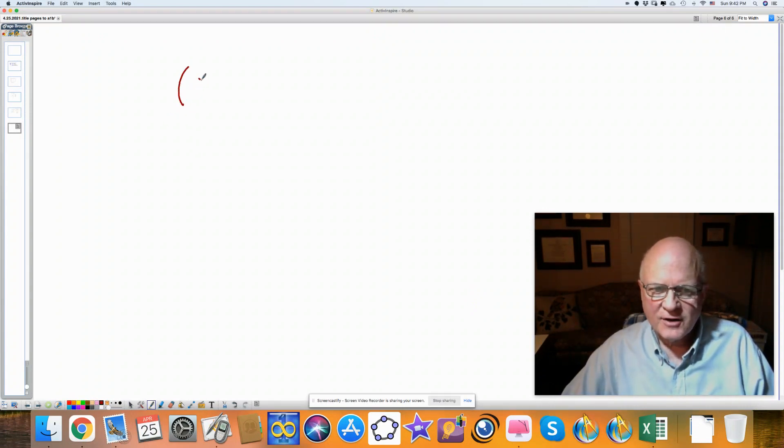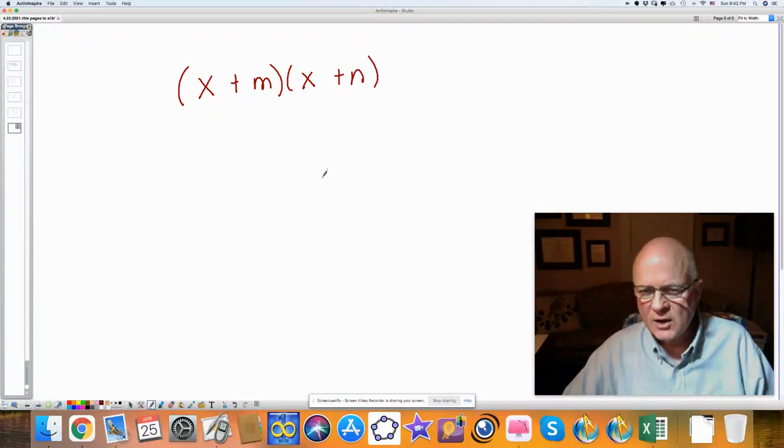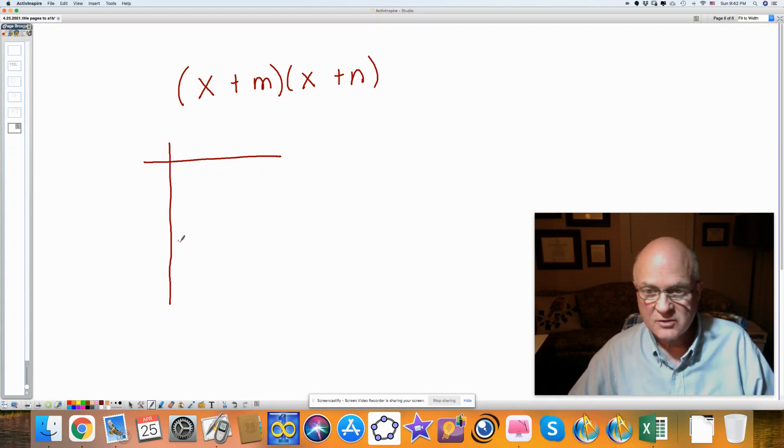If I have two binomials, x plus m and x plus n, and I want to multiply them out, you can see that if I were to put these into an area model, like the box, you have x plus m times x plus n, and I'm going to multiply the rows by the columns.